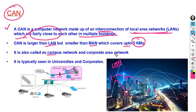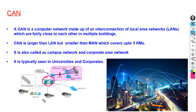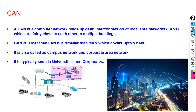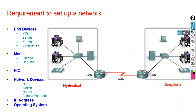CAN is typically seen in universities and corporates. In this example, we have one academic building connected with buildings one, two, and three which are fairly close to each other. It is connected with a hostel zone and a residential zone. Students sitting in the hostel zone can access the library, and students in the residential zone can also access the library and the internet.